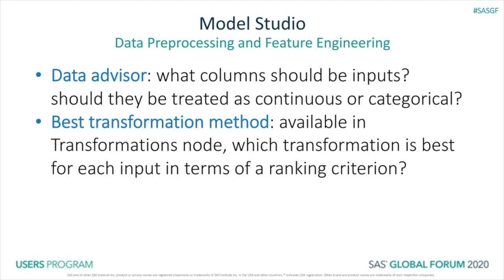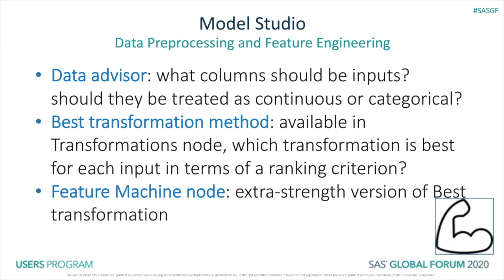You can find more information about these two features in our paper, but today I'm going to focus on the Feature Machine node, our new automated feature engineering node that came out in 8.5 that you can think of as an extra strength version of the best transformation.